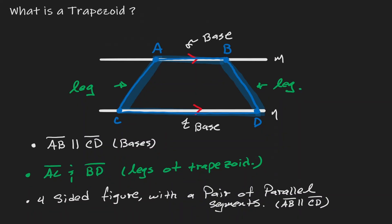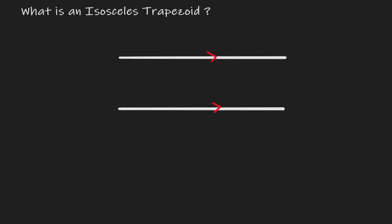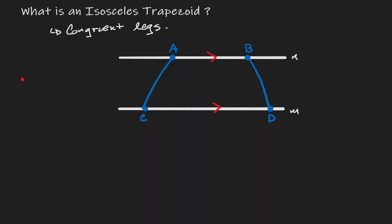Now let's consider a more specific trapezoid, and that is an isosceles trapezoid. So what is an isosceles trapezoid? That is when our trapezoid has congruent leg lengths. So let's create an isosceles trapezoid here. Let's call this line N and this line M, and choose two points on each line, such that AC has to be congruent to BD. If AC is congruent to BD, then we can claim that the figure is an isosceles trapezoid.